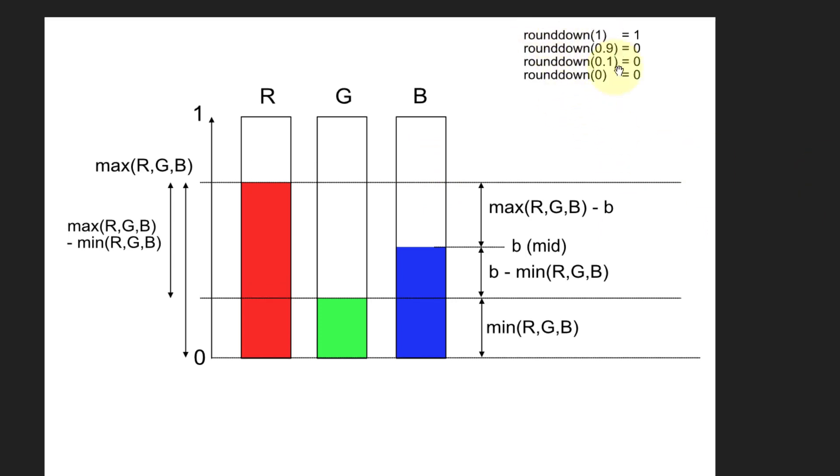One is the round down function, which says if I round down a number between 0 and 1, only if it's 1 will it stay up at 1. Otherwise it's always going to fall down to zero because rounding down effectively discards the fraction part.